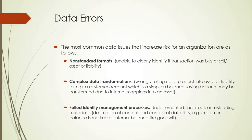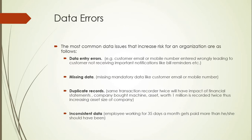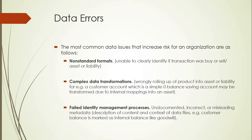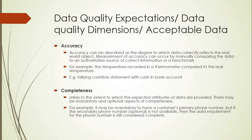As much as possible, complex data transformations should be avoided. Where they exist, business lines need to clearly understand the logic behind them. Failed identity management — misleading metadata — means the context of data is taken wrongly. For example, a customer balance is marked as an internal balance like goodwill, making it an intangible asset rather than a customer asset, leading to faulty reporting. If all these issues are addressed, data quality can substantially improve.